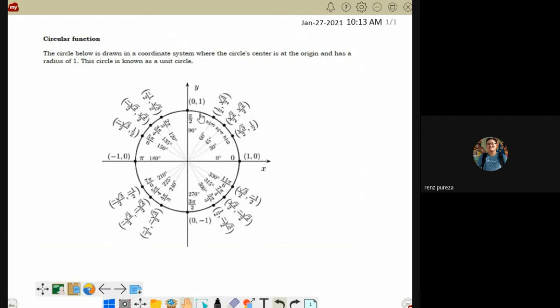So these values are very important. The 30-60, 45 - these are the right triangles that we can make in a unit circle.